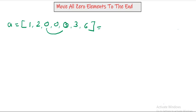It will be like this: 1, 2, 3, 6, 0, 0, and 0. So all the zeros should be at the end and numbers should be before all the zero elements. Okay, so let's understand how we can sort out this problem.